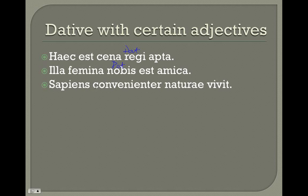Sapiens convenienter naturae vivit. Here's our dative. Although this wasn't in the list, here it happens to be an adverb which takes a dative. So: the wise man lives according to — literally conveniently, though we'd say 'according to nature.' And again, that 'to nature' carries the dative 'to' or 'for' idea.